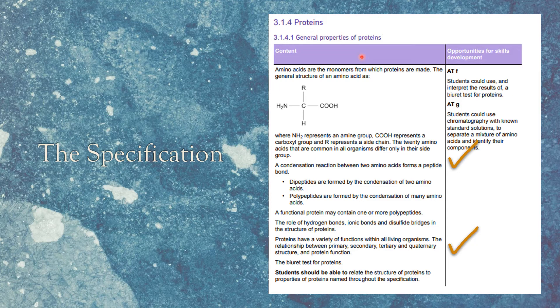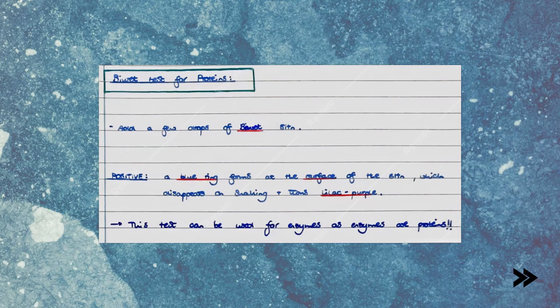Next we just need to have a look at the biuret test for proteins. To test for proteins, simply add a few drops of biuret solution. If protein is present, a blue ring will form at the surface of the solution, which disappears upon shaking, and the solution turns lilac purple. Note that the biuret test can also be used for enzymes, as enzymes are proteins.